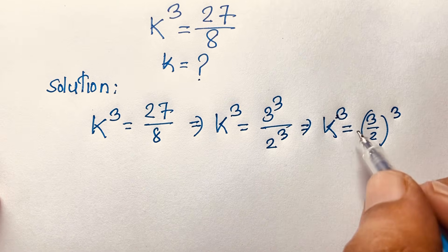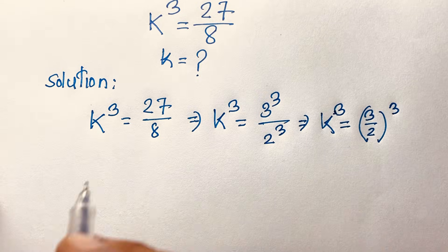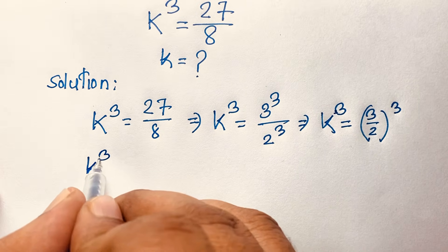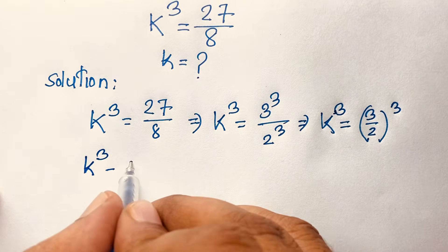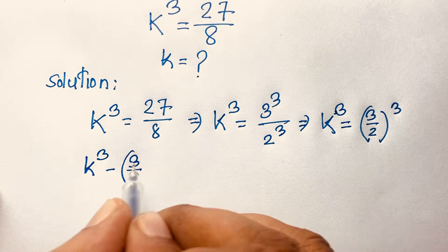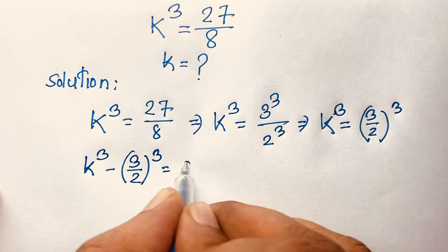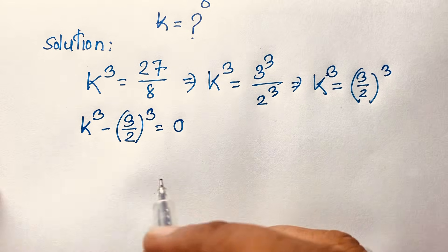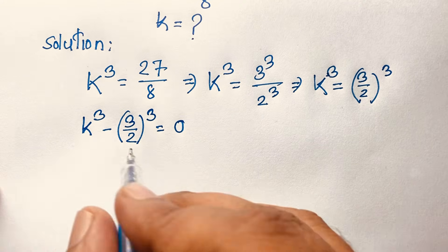We are finding the cube root, so we can rearrange: k³ = (3/2)³, which means k³ − (3/2)³ = 0. Now we apply the a³ − b³ factoring formula.